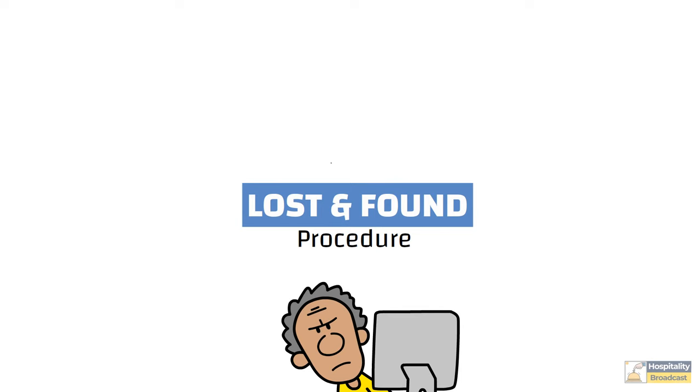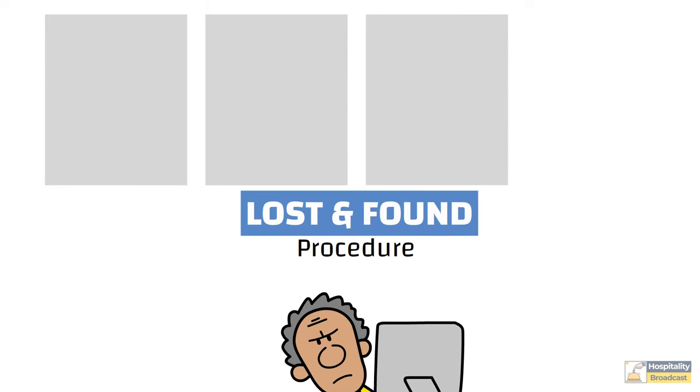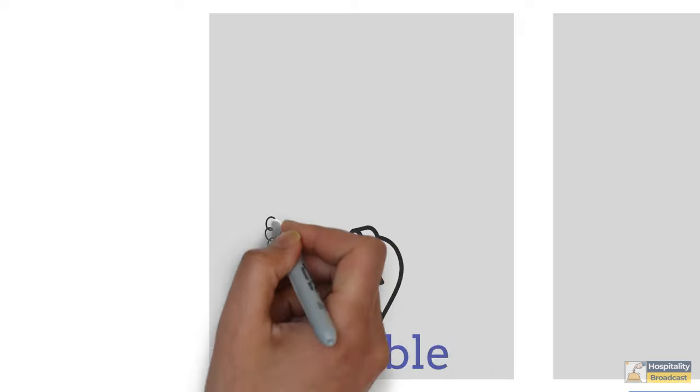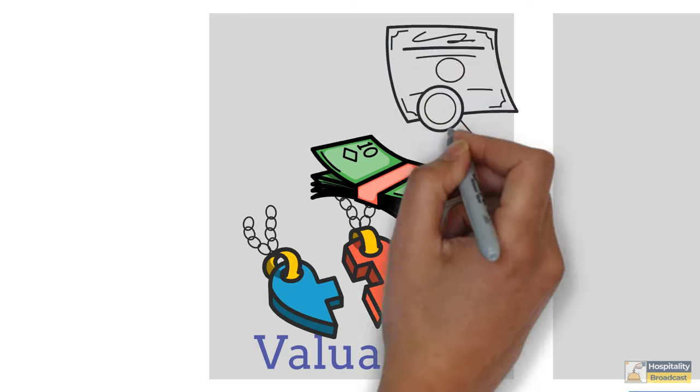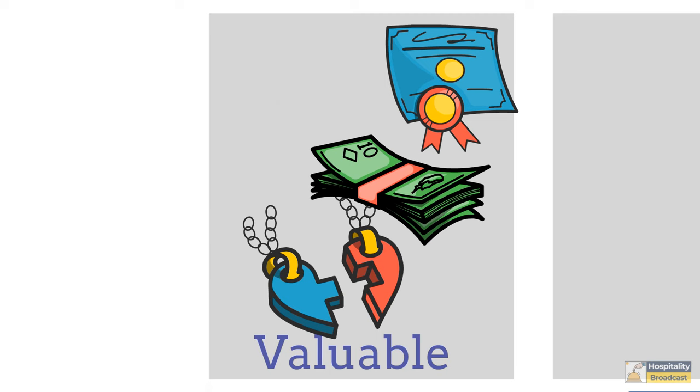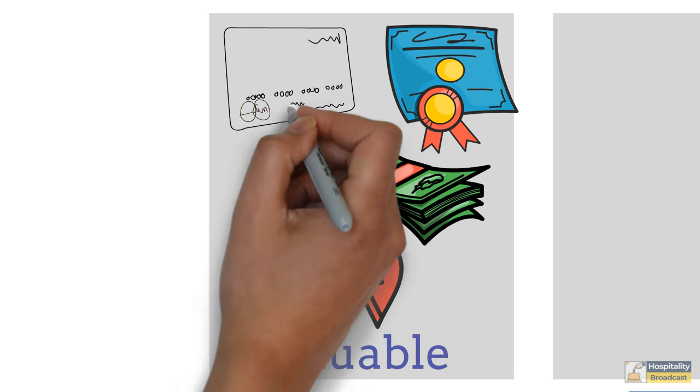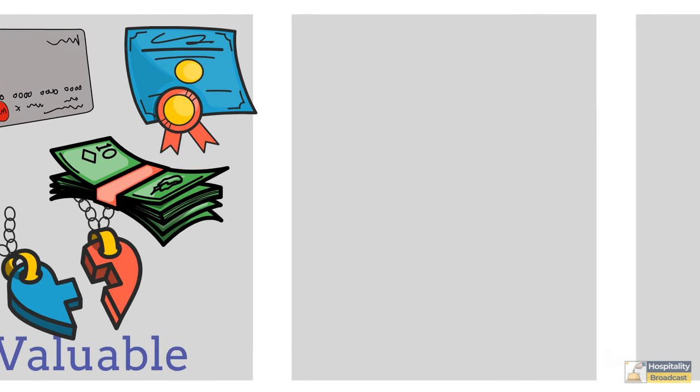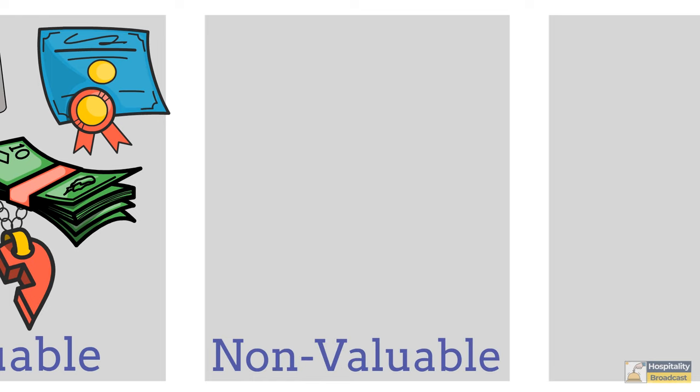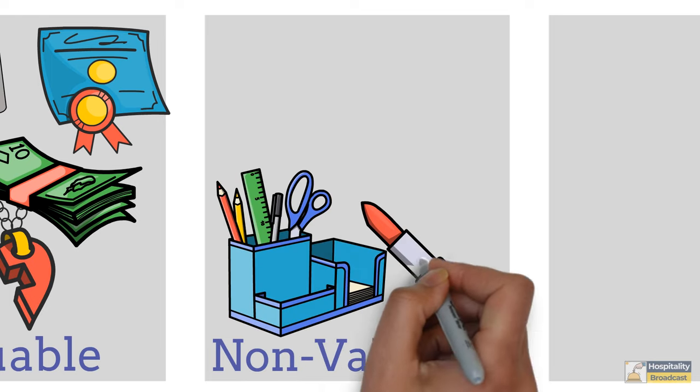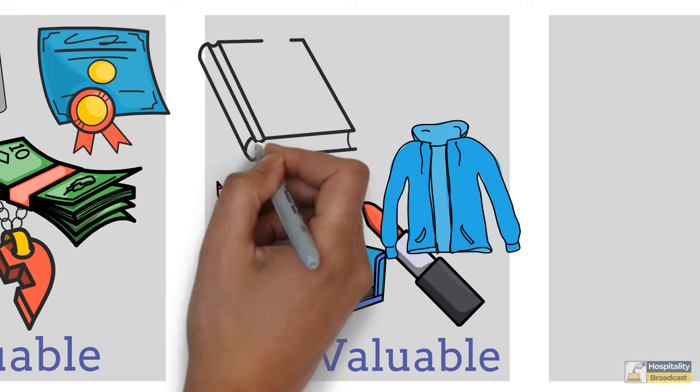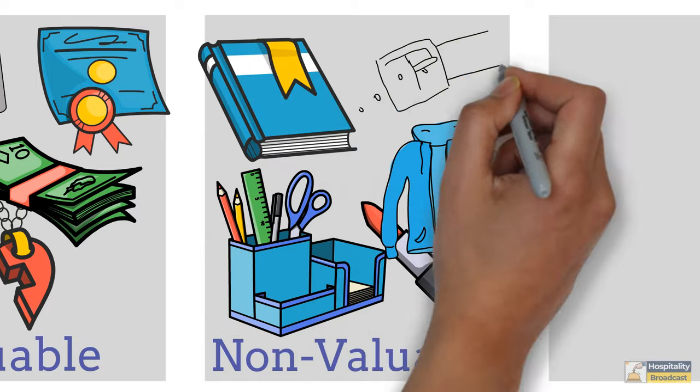First is valuable items such as jewelry, cash, official or personal documents, branded items, credit or debit cards. Non-valuable such as some stationery, cosmetics, clothes, magazines, books or some accessories.